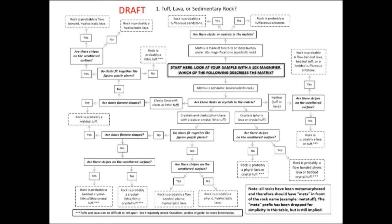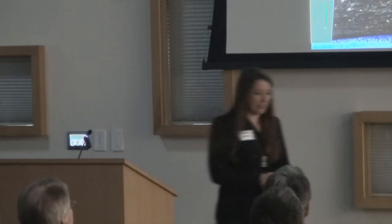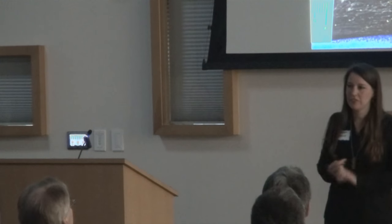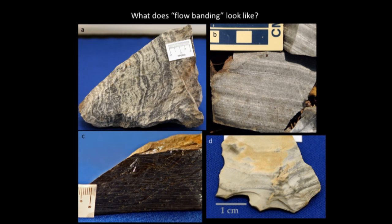After deciding on hyaloclastic clasts, fiamme, none of the above, crystals, etc., you next determine if there are stripes on the surface — that's actually an easier decision. If there are stripes, you end up with either bedding or flow banding. Flow banding occurs when lava is flowing — on the surface or in the neck of a volcano — and friction from contact with solid rock causes laminar flow, producing those squiggly lines.